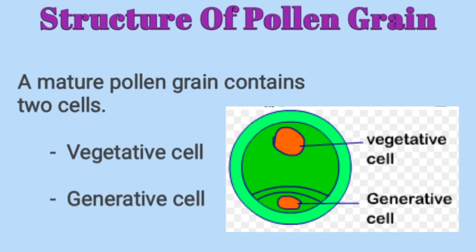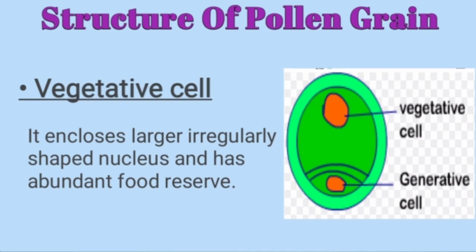Now let's see about the structure of a matured pollen grain. A matured pollen grain contains two cells: the first one is the vegetative cell and the second one is the generative cell, as you can see in the diagram. The vegetative cell encloses a larger, irregularly shaped nucleus and has abundant food reserve. In the diagram, the upper portion is the vegetative cell and the lower portion is the generative cell.